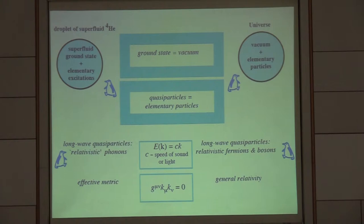We have the following connection: superfluid ground state plus elementary excitations, phonons and rotons. On the other side, we have our universe where we have the vacuum, which is also very complicated structure but is the ground state of the system, plus elementary particles, which are rather few in number in the present universe.